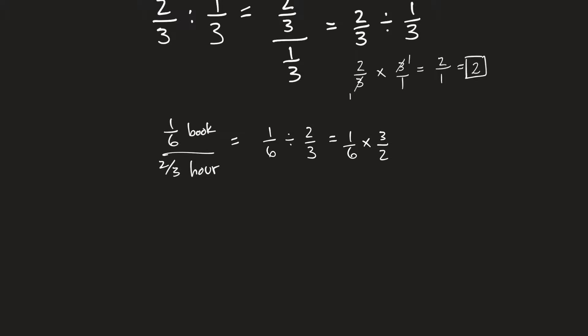I could cross-cancel here. Three will divide three, and three also divides six. So three divides three one time, and three divides six two times. Now I can multiply across. One times one, so one times one is one, and two times two is four. And that is the unit rate.